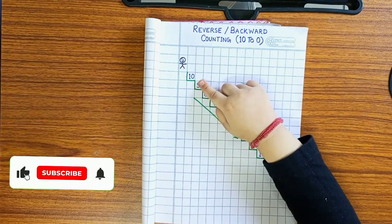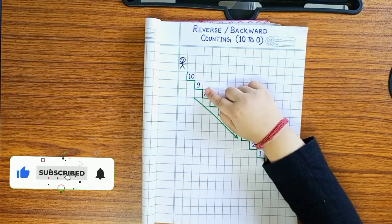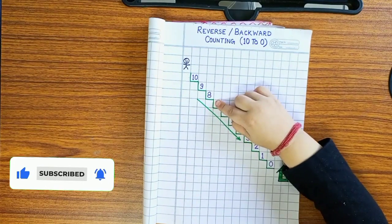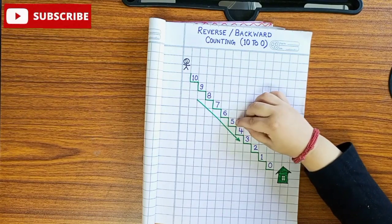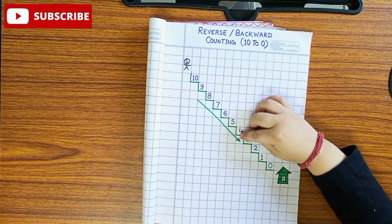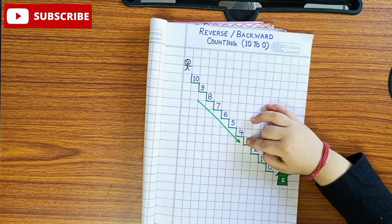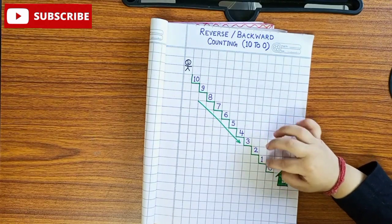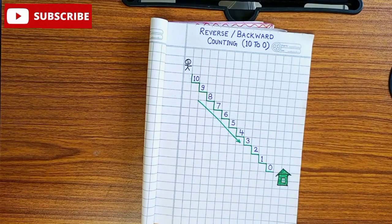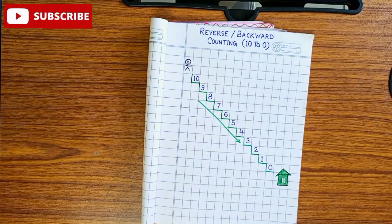9, then 8, 7, 6, 5, 4, 3, 2, 1, 0. And you are in? Home.